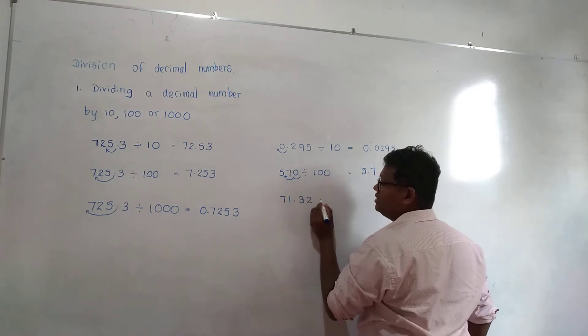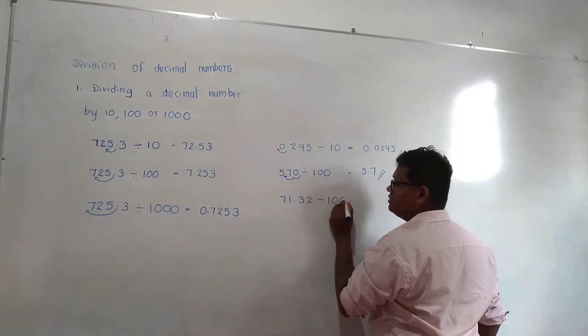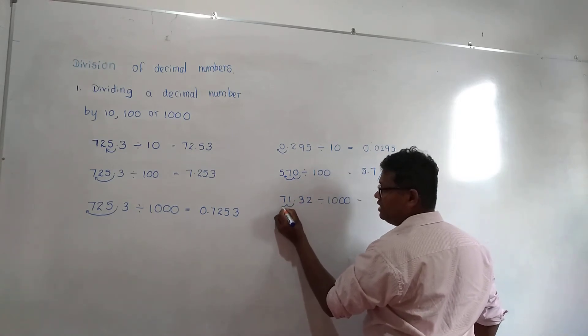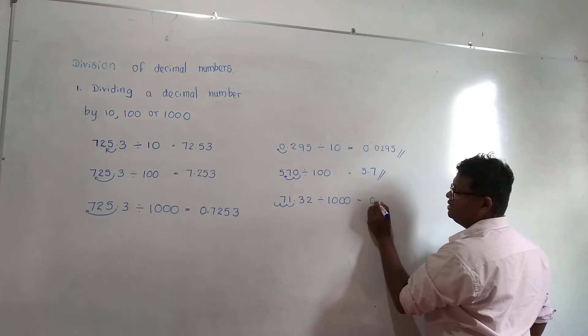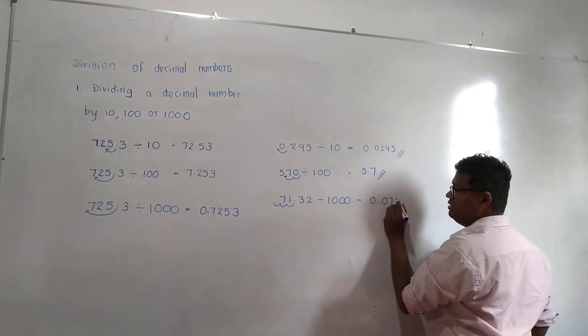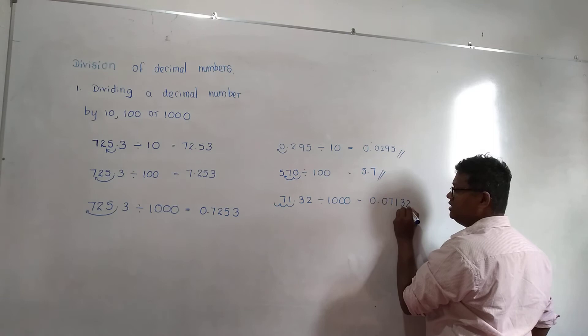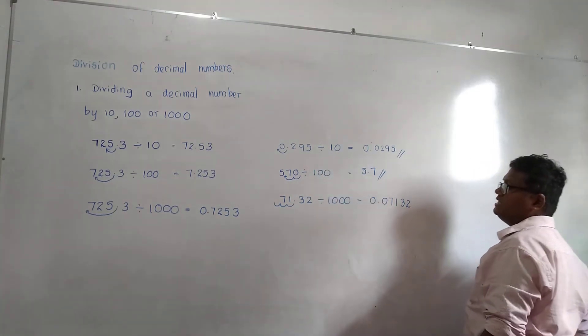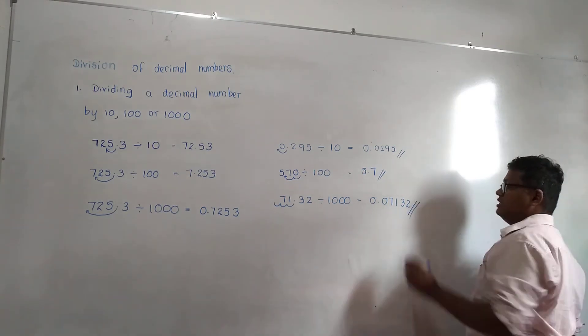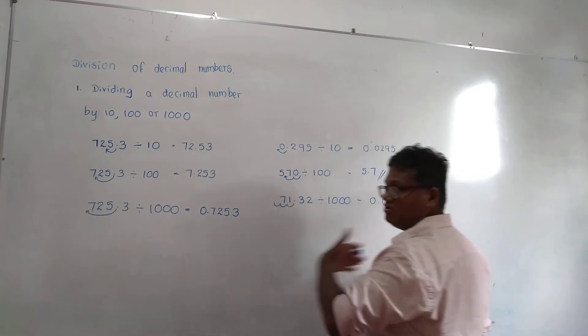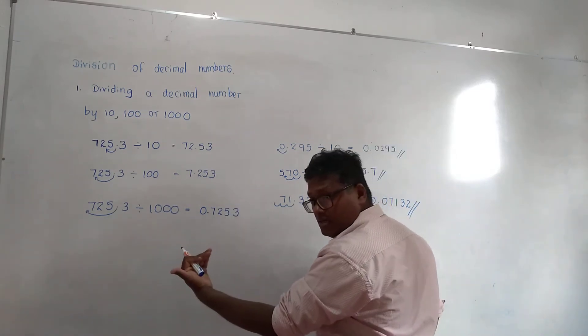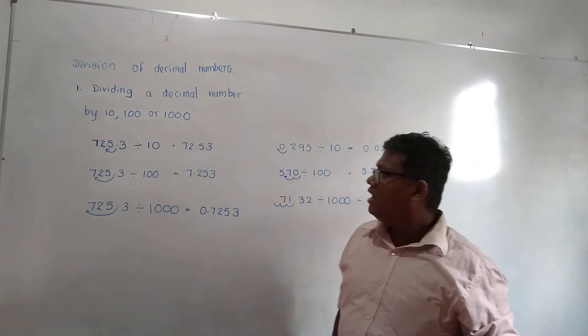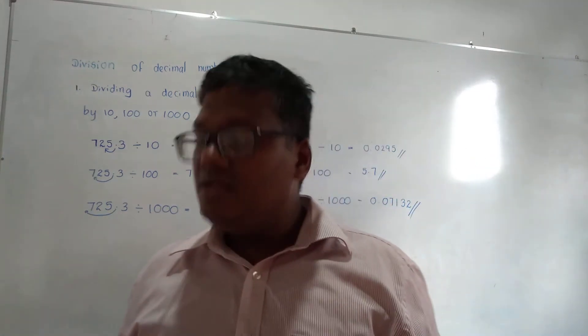71.32 divided by 1000. The decimal point was here. It is taken forward three times: 1, 2, 3. Then 0.07132. When you are dividing, decimal point will go to left side. When you are multiplying, decimal point will go to right side. 10 means once, 100 means twice, 1000 means three times.